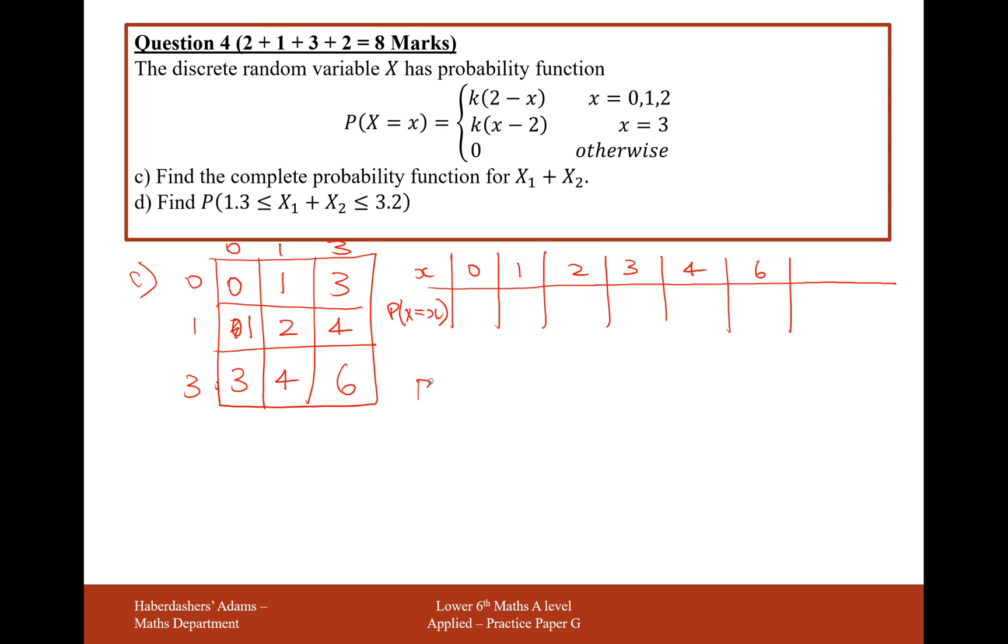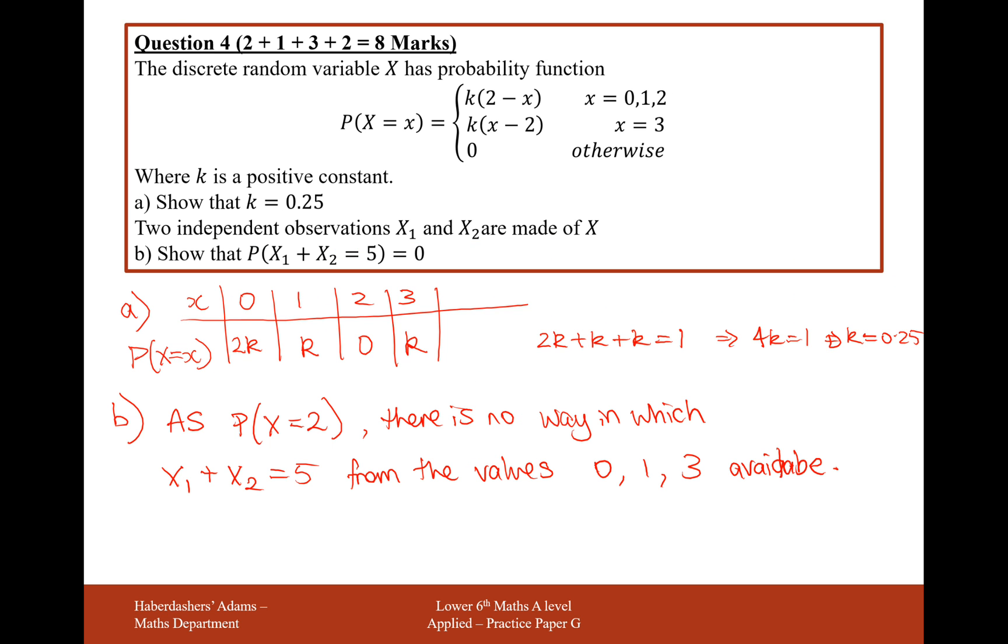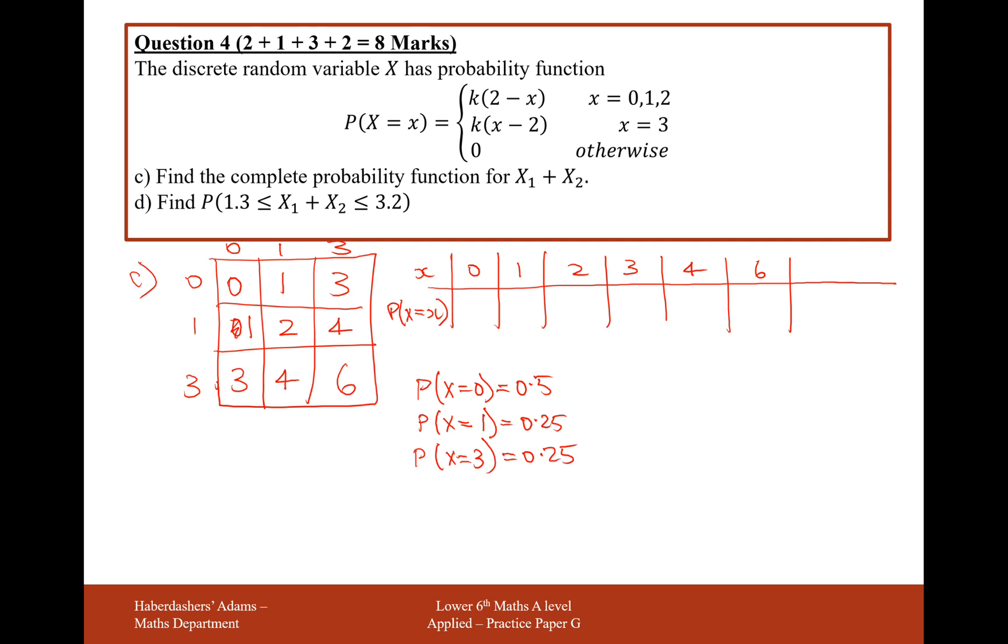Remember here the probability of rolling a 0 was 0.5. The probability of rolling a 1 was 0.25, and the probability of rolling a 3 was also 0.25. How do I know this? Look back in the previous question. I've worked out k is 0.25, and I've got a 0.5 here, a 0.25 here, and a 0.25 here.